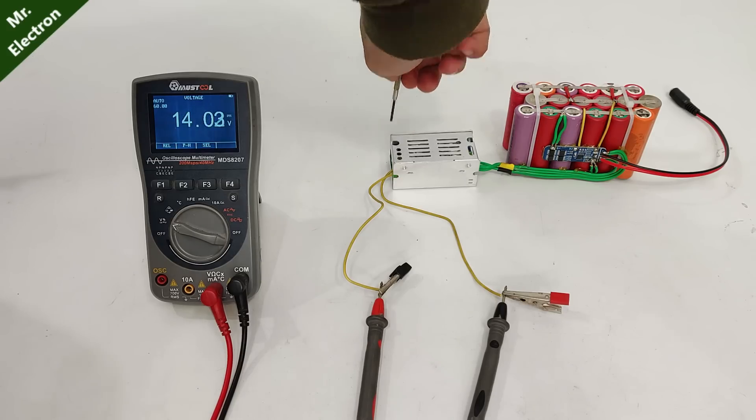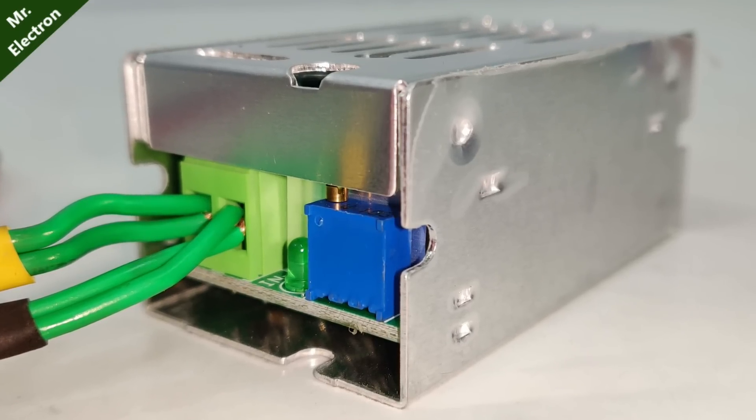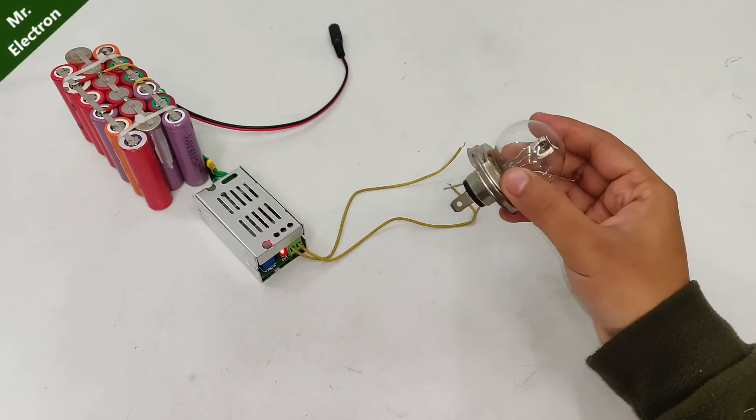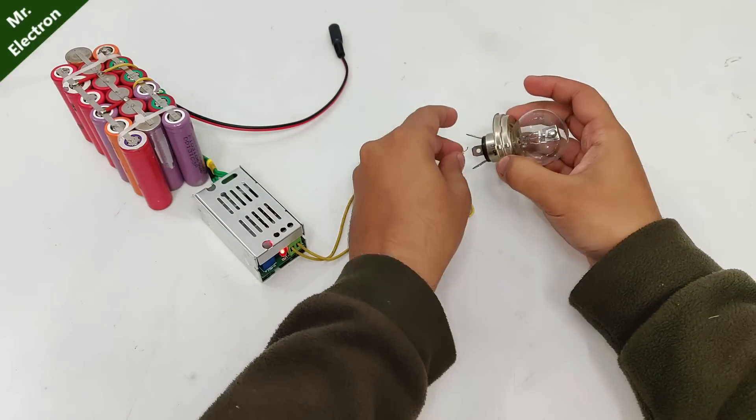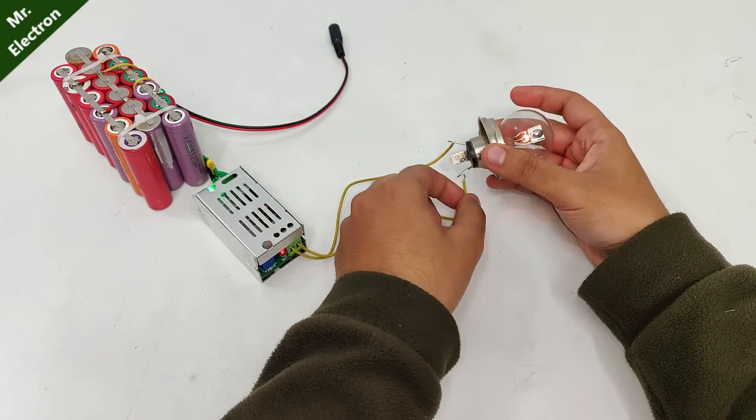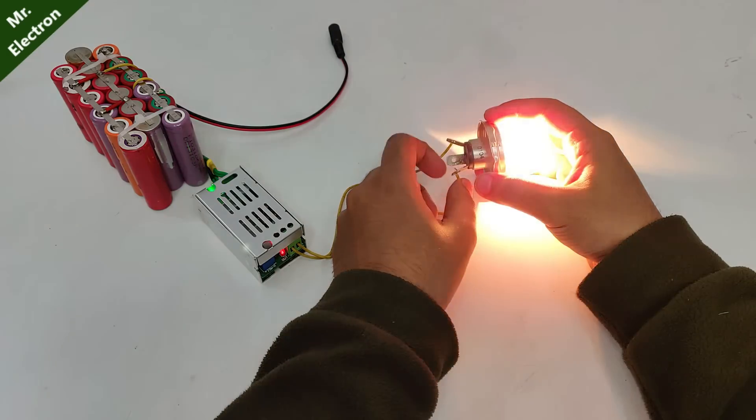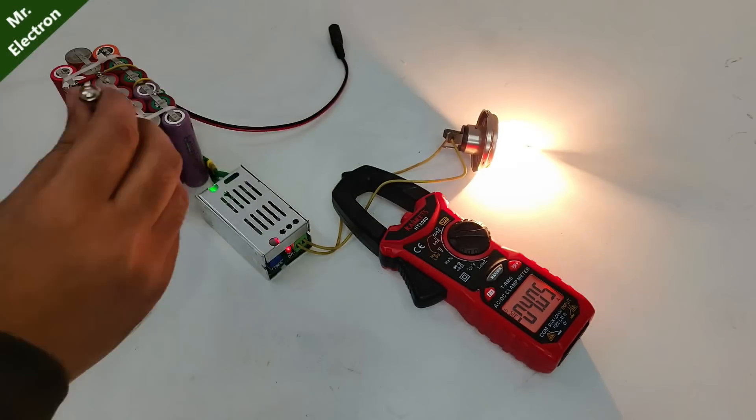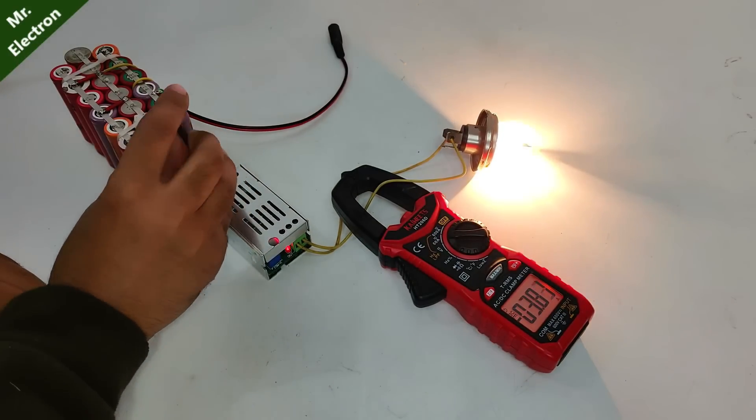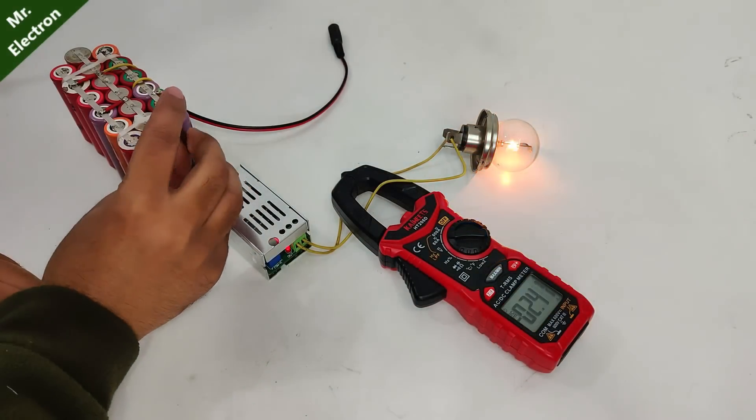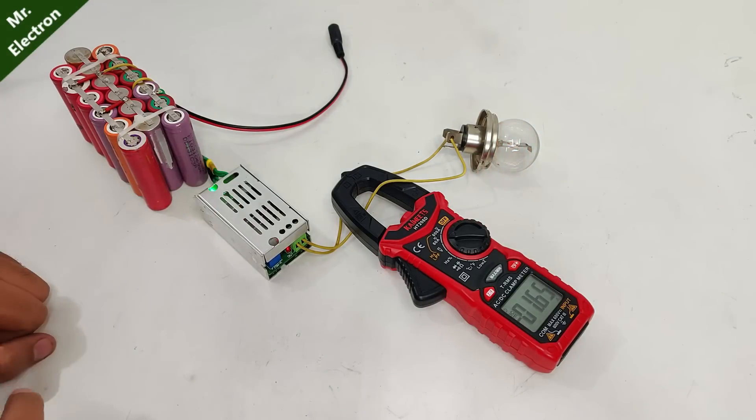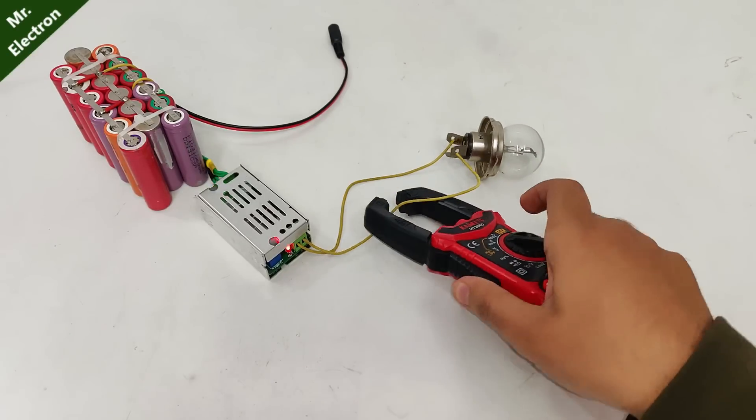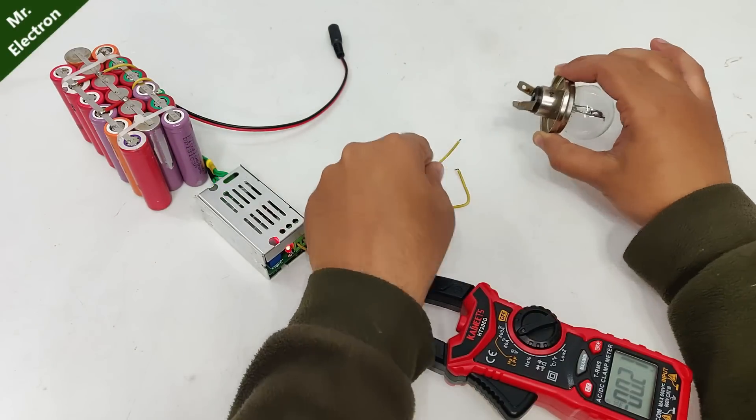Now there is another potentiometer at the input side for current adjustment. So take a bulb, this is 40 watts, and connect it to the output. Now take a clamp meter and measure the draw current. You can see 4 amperes, so let's bring it down. Yeah so here I have reduced the current to 1.6 amperes because of which the bulb has stopped glowing.